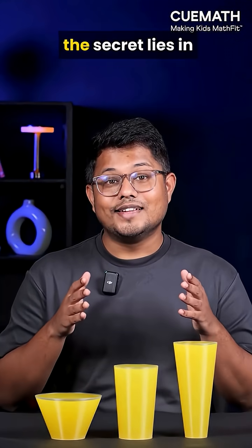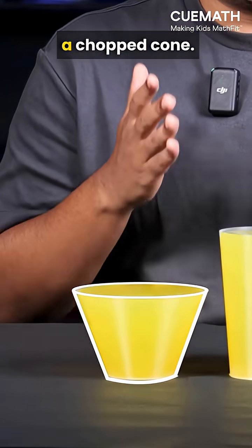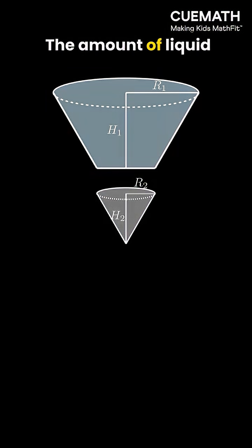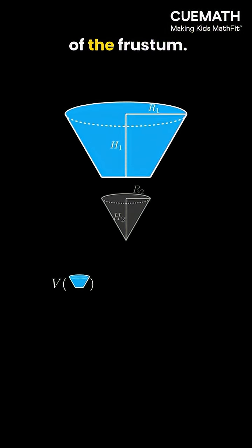For this mystery, the secret lies in the shape: frustum, a chopped cone. The amount of liquid in a glass is nothing but the volume of the frustum.